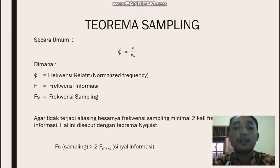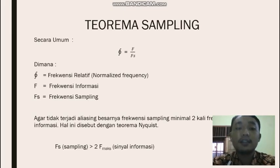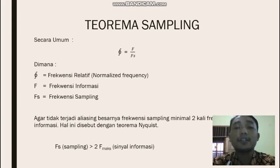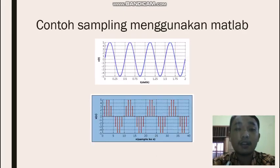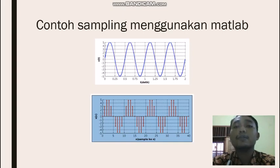Ada rumus kedua yaitu frekuensi relatif sama dengan frekuensi informasi per frekuensi sampling. Agar tidak terjadi aliasing, frekuensi sampling minimal 2 kali frekuensi informasi. Ini disebut dengan teori Nyquist, jadi F_s sampling lebih dari 2 kali F_max sinyal informasi. Dalam menggunakan teorema sampling ini ada beberapa aplikasi yang membantu, salah satunya yang saya gunakan adalah MATLAB.